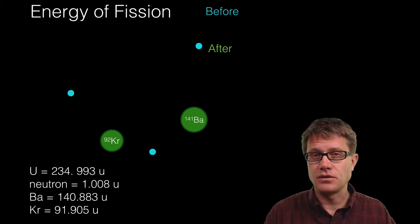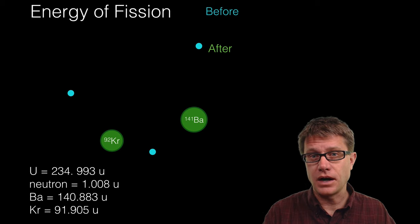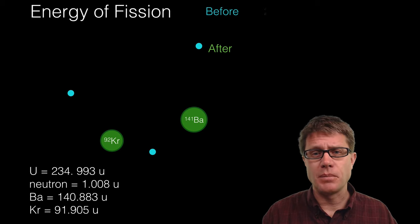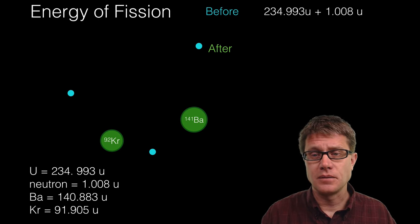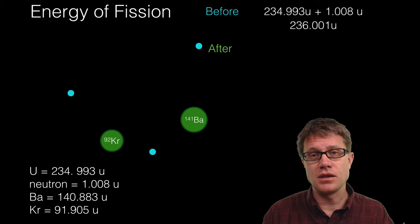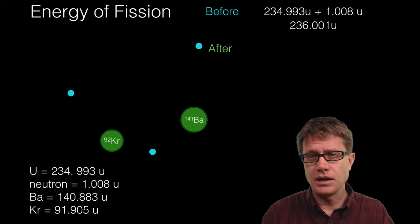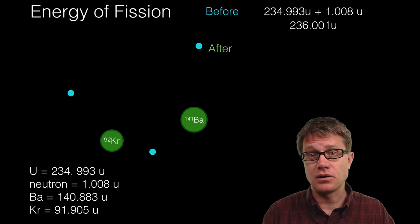So before the reaction we had two things. We had the uranium-235 and the neutron. So I am going to figure out the mass of each of those together. So I am simply going to add those up. And this is going to be the mass before. I then figure out the mass after. So what do we get after? We get the barium, the krypton and the three neutrons.